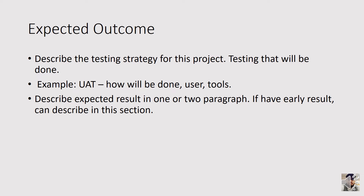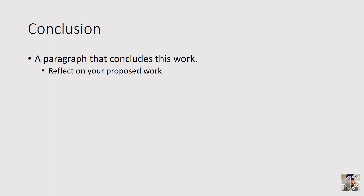You can also describe the expected result in one or two paragraphs. If you already have early results, you can describe them in this section. The last part is the conclusion, which is meant to conclude your work. Reflect on your proposed work: describe the domain briefly in two or three sentences, followed by the problem, the existing solution, your proposed solution, and the outcome. Network and graphic students who complete this part will have finished their PSM1 report.